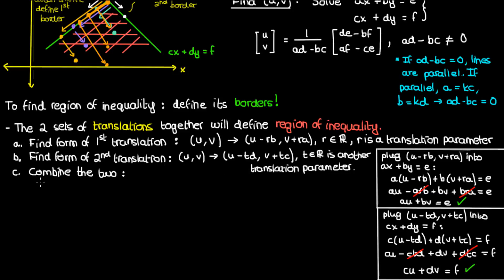We've translated the first coordinate of the point of intersection by negative r·b in the first translation and by negative t·d in the second translation. So the combination of those two translations gives u minus r·b minus t·d. The second coordinate is translated by plus r·a in the first translation and by plus t·c in the second translation, so combining the two gives v plus r·a plus t·c.